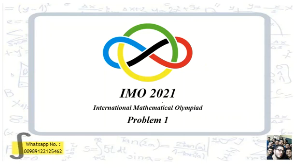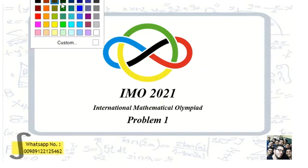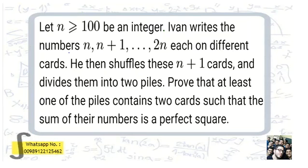IMO 2021 International Mathematical Olympiad problem number one. Let n be an integer greater than or equal to 100. Ewan writes the numbers n, n+1, up to 2n each on different cards. He then shuffles these n+1 cards and divides them into two piles. Prove that at least one of the piles contains two cards such that the sum of their numbers is a perfect square.